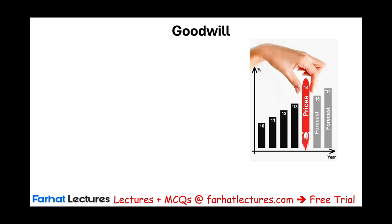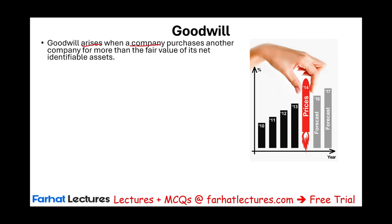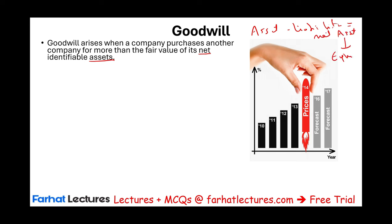Now let's look at goodwill — an interesting intangible. It's not charity; goodwill in business is something totally different. Goodwill arises when a company purchases another company for more than the fair value of its net identifiable assets. Net assets equal assets minus liabilities, which is the same as equity. When you want to buy a company, you look at their assets and liabilities at fair value. For example, if assets are $100 and fair market value liabilities are $30, their net assets equal $70.